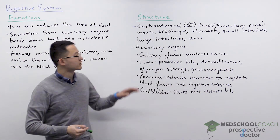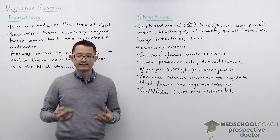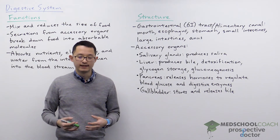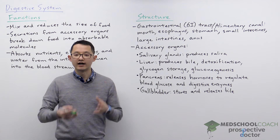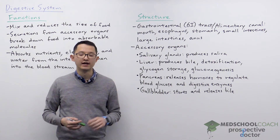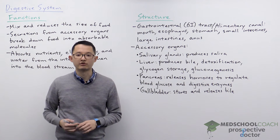Let's now take a look at the structure of the digestive system. In this diagram you can see that there are two main components: the alimentary canal, or the GI tract, as well as the accessory organs. The gastrointestinal tract is essentially a tube that carries food through the body for digestion and absorption.